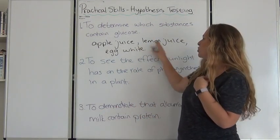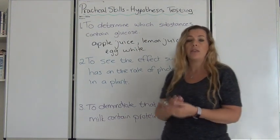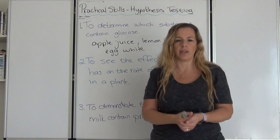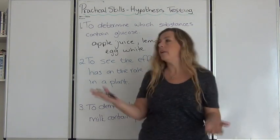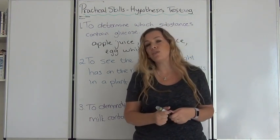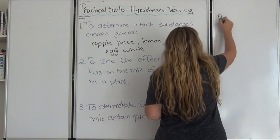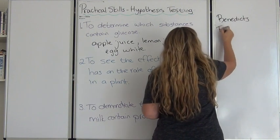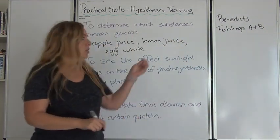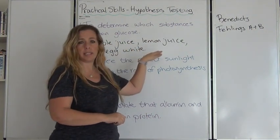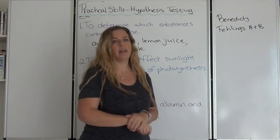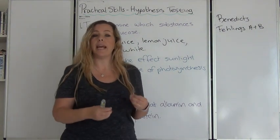Because I think that apple juice and lemon juice both contain glucose, and albumin or egg white does not, the hypothesis will then be: apple juice and lemon juice contain glucose, whereas egg white does not contain glucose. Now, how do I know if these contain glucose? There are two possible tests you can do: Benedict's solution, or Fehling's A and B. You add either solution to the substances, heat it, and if it goes a brick red, orange, or brownish colour, then you know it does contain glucose. So the hypothesis is something we can test.